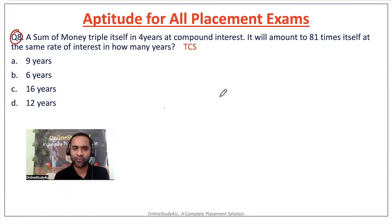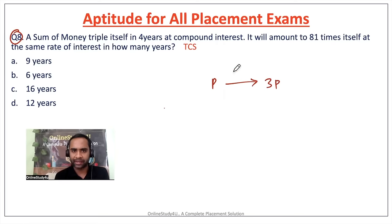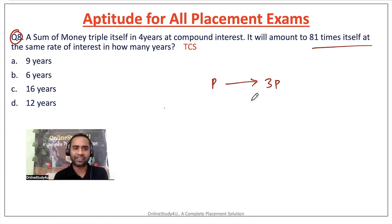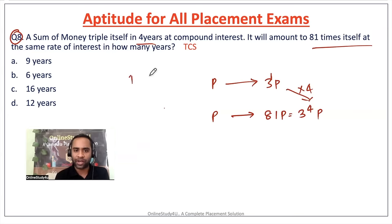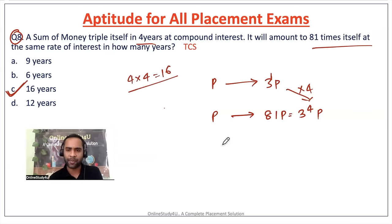Question number eight: a sum of money triples itself in 4 years. It will amount to 81 times itself at the same rate of interest in how many years? If you invest P it becomes 3P in 4 years. 81P = 3⁴ × P, and 3¹ to 3⁴ is a multiplication factor of 4. So 4 × 4 = 16 years is the correct answer.